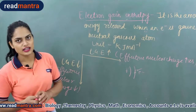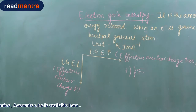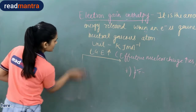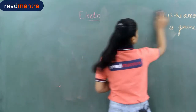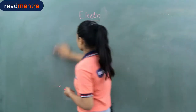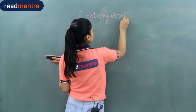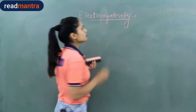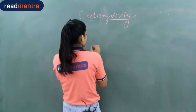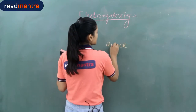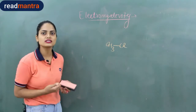That was electron gain enthalpy. Now let's go to electronegativity, which is the last trend. In any covalent bond — for example in CH₃Cl — there is a shared pair of electrons. The tendency of an atom to attract that shared pair of electrons is called electronegativity.